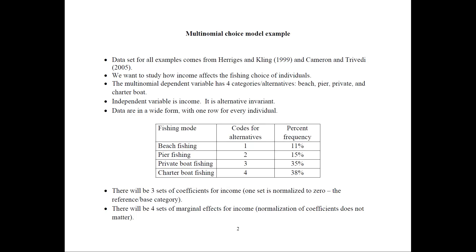Here are the examples, and for that we would use the dataset from these authors. This dataset is on fishing choices for individuals. For the multinomial choice model, we would like to study how income affects the fishing choice. The multinomial dependent variable would have four categories or alternatives: beach, pier, private, and charter boat. These are different ways in which you can do fishing.